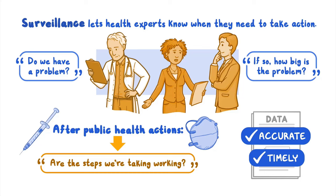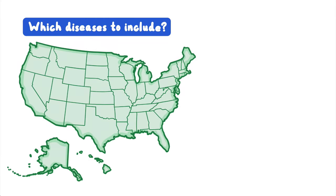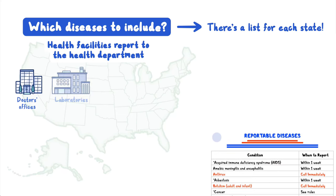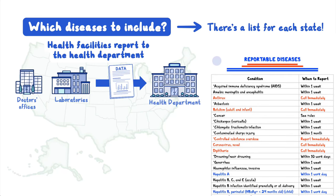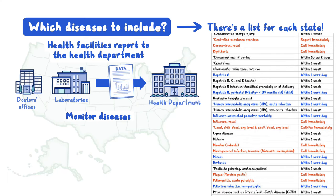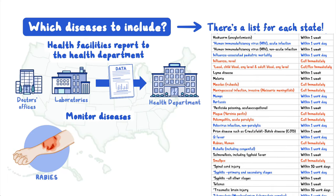When public health experts have identified the purpose and goals of their surveillance system, they must decide which diseases to include, what data to collect, and how to collect it. Public health experts in each state develop a list of diseases that health facilities, such as hospitals, should report to the health department if cases are detected. These are called reportable diseases, and the cases can usually be confirmed by laboratory testing. Health departments collect data to monitor these diseases because they can cause serious illness, spread easily from person to person, or cause deadly pandemics. Examples of reportable diseases are rabies, measles, and COVID-19.